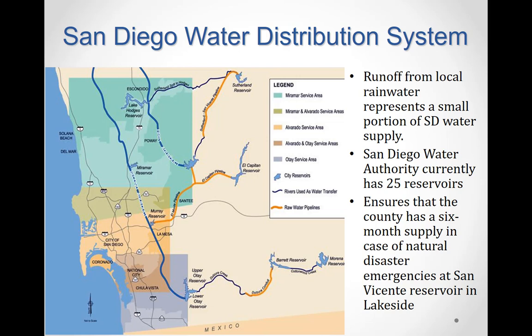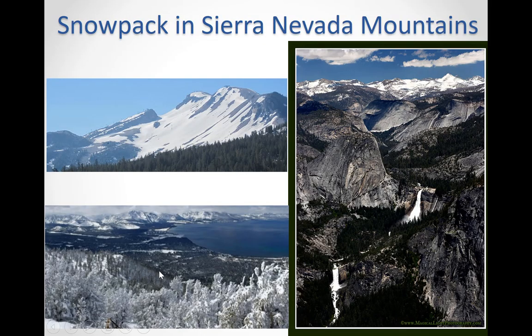All of these reservoirs are man-made structures — artificial lakes built by damming a specific geographic location to collect water behind the dam. Water from these reservoirs is distributed across various service areas in the city, such as the Miramar service area, the Alvarado service area, and the Otay service area.